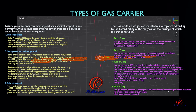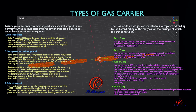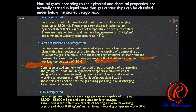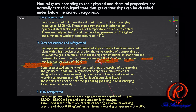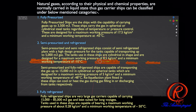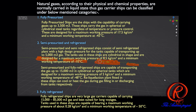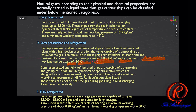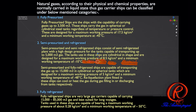Types of Gas Carrier: Natural gases, according to their physical and chemical properties, are normally carried in liquid state. Thus, gas carrier ships can be classified under the below-mentioned categories.